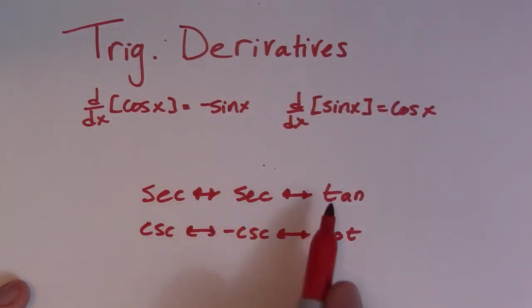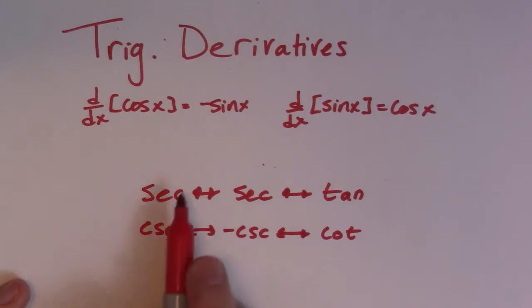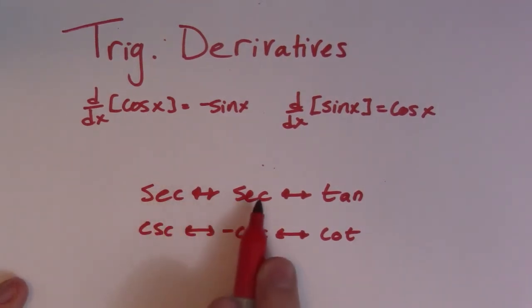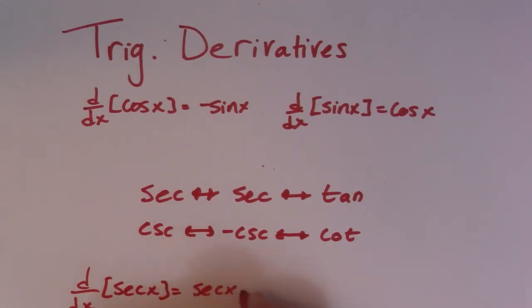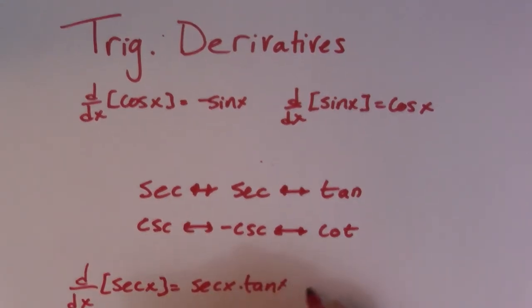So it's easy to remember. Secant, secant, tan, cosecant, cosecant, cotan. So if you want to figure out what the derivative of secant is, then you just got to go secant tan. So the derivative of secant x is secant x tan x, just like that.